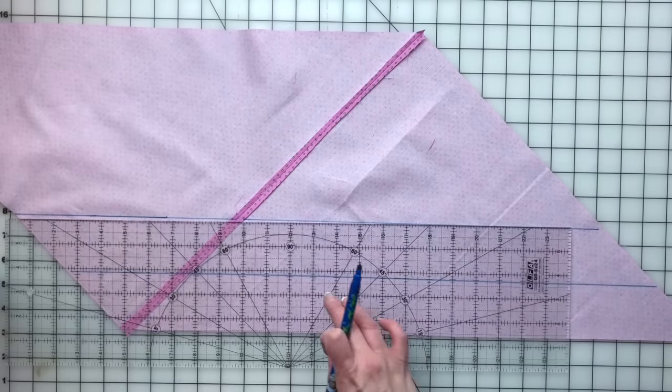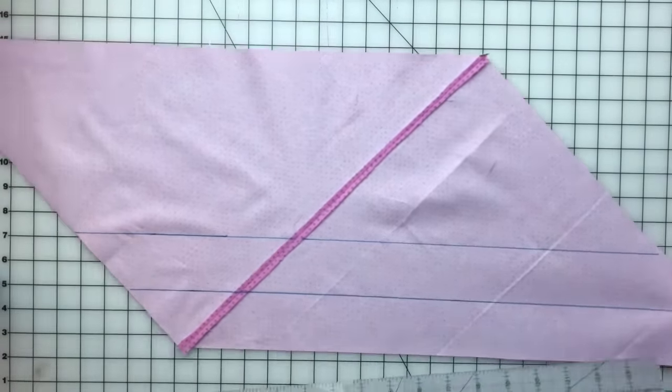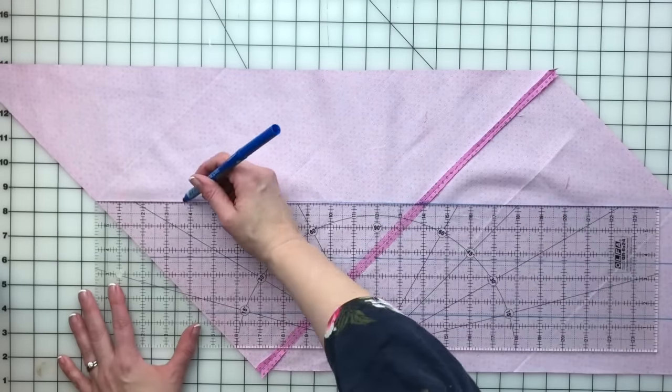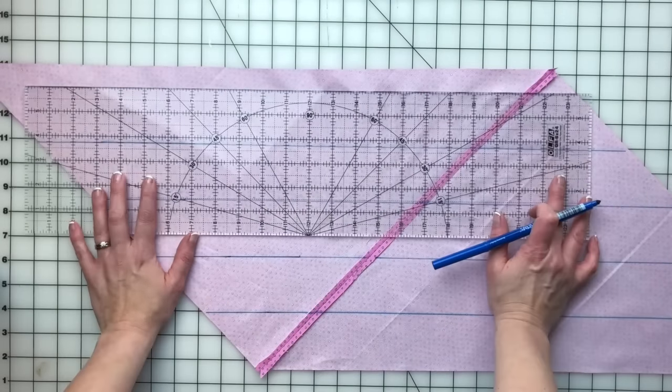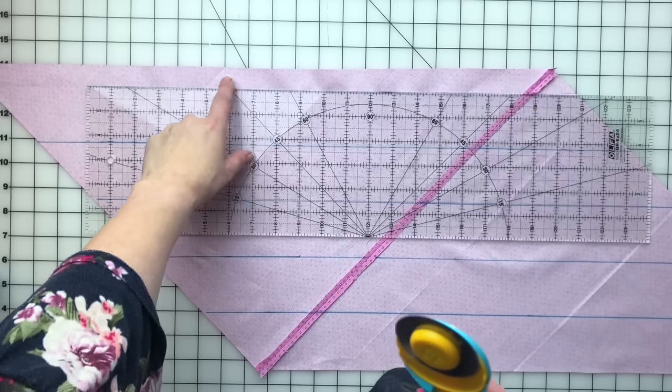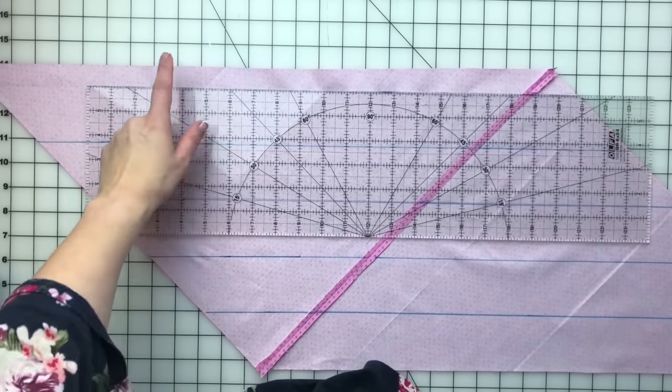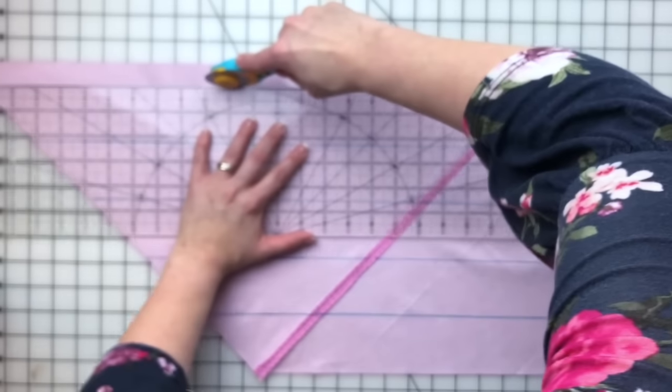So I'll go ahead and mark lines all the way up to the top of the edge here. This last edge right here, this little piece, is only an inch so it's not wide enough to be binding. I'm just going to cut it off instead of marking it.